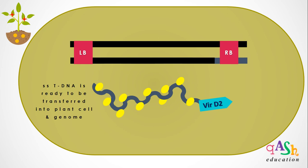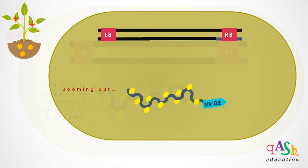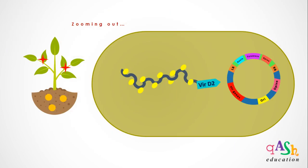We have now obtained our T-DNA to be transferred inside the plant cell and integrated into the plant genome. It should be kept in mind that VirD2 remains attached to this single-stranded T-DNA copy until the end and completion of the process. Let's zoom out now to see what happens inside the plant cell.